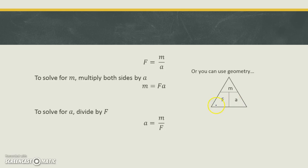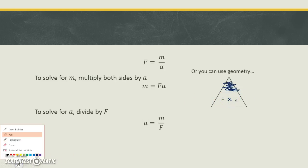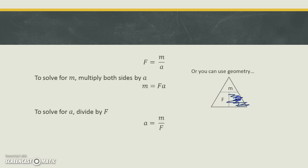So how do we use this? If I'm solving for f, I'm going to cover the f up, and that tells me that I've got m divided by a left over. What if I was solving for m? We cover m up and we're left with f times a, because they're right next to each other. What if we're going to solve for a? We cover a up and we're left with m over f. Using geometry to help you solve the problems of the world.